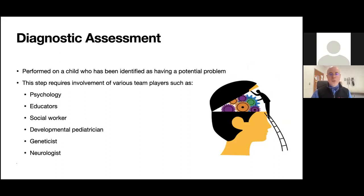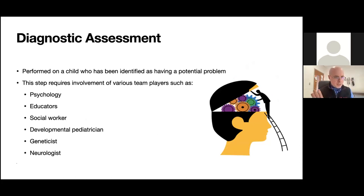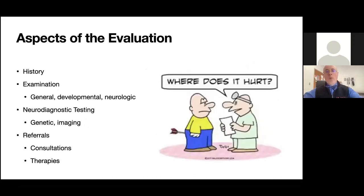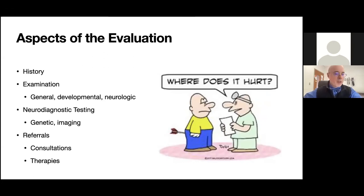When we have concerns for a developmental problem and are considering involving the team for assessment, that team includes psychology, educators, social work, perhaps a developmental pediatrician, a geneticist, and of course neurology. The aspects of assessment when a child is referred to us include the history, our exam, any needed testing, and referrals to appropriate therapists or other subspecialists.